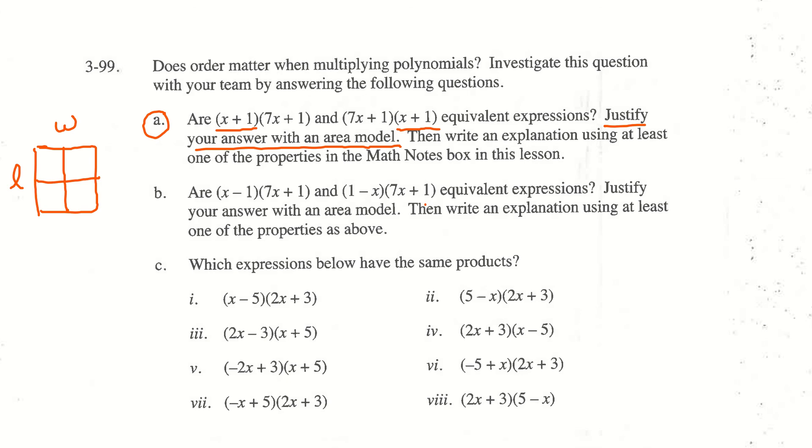In part b, there are two problems here. If you'll notice closely, one of them's got 7x plus 1, 7x plus 1, and then these other two are super close, right? It's x minus 1, and then it's 1 minus x. It's asking, are these equivalent to each other? So make sure you again, using an area model, justify your answer with an area model. Set that up and do that for b as well.